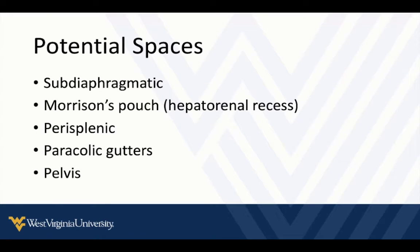There are really five potential spaces. We've got subdiaphragmatic spaces. We've got Morrison's pouch on the right. We've got the perisplenic potential space, which is also subdiaphragmatic on the left. We've got paracolic gutter areas on either side, and then we've got the pelvis, which looks a little different from male to female — but those are our main potential spaces to identify peritoneal fluid.